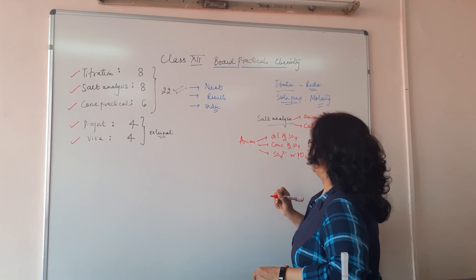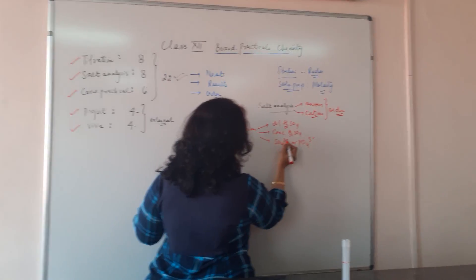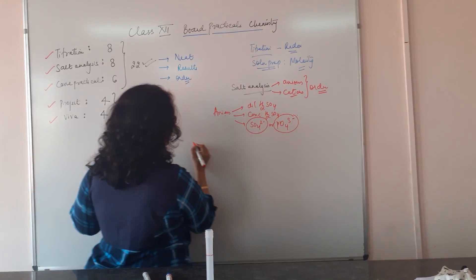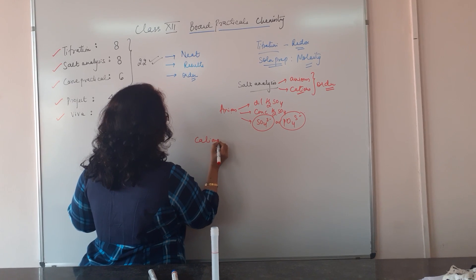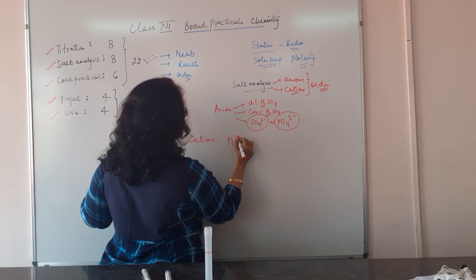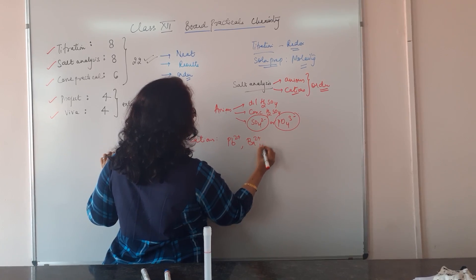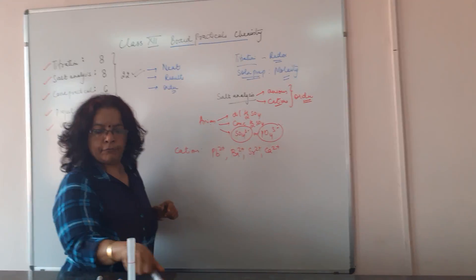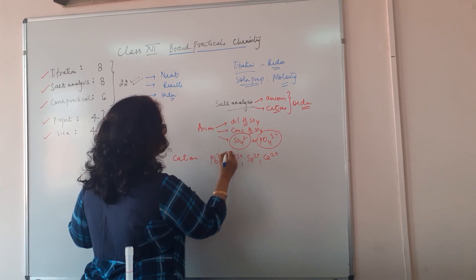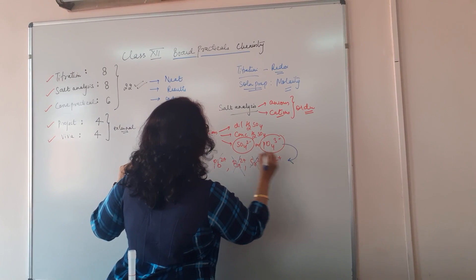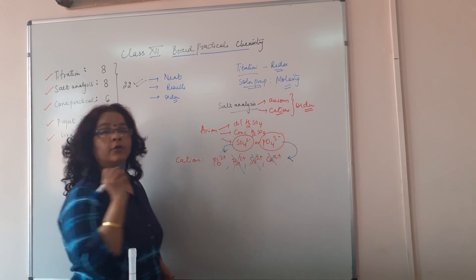Now important is in case you have a sulfate or phosphate then in your cations, your lead, barium, strontium and calcium would be absent.